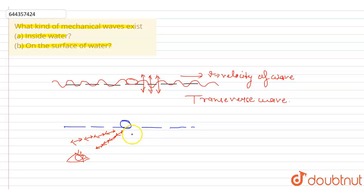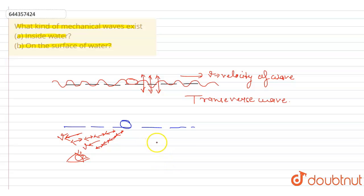This is the motion of particles which are inside the water, not on the surface. If you observe, the particle will oscillate in the direction of the velocity of the wave. This is the direction of velocity of the wave. When the particle oscillates in the direction of the velocity of the wave, such waves are called longitudinal waves.